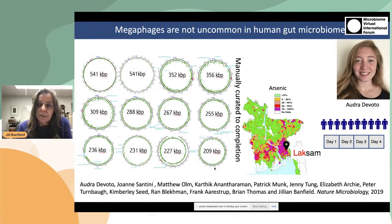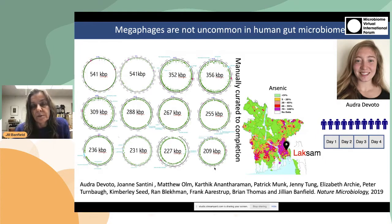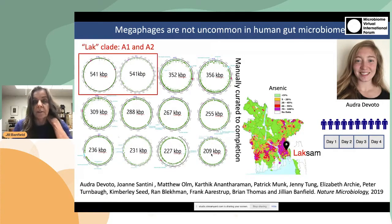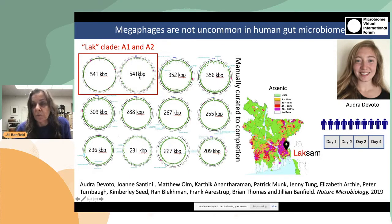What first caught my attention was an analysis we were conducting with Joe Santini at University College London of the microbiomes of the gut of people from Bangladesh who had been impacted by arsenicosis — arsenic poisoning. These genomes were manually curated to completion, and it was apparent that just a few individuals contained many phages with very large genomes. The ones shown here are all greater than 200 kb. The genomes of particular interest were those that were the largest, on the order of 540 kilobase pairs. I'm going to refer to these as the LAC clade because they were discovered in Lac Sam in Bangladesh, and I'm going to talk about these two specific genomes as A1 and A2.